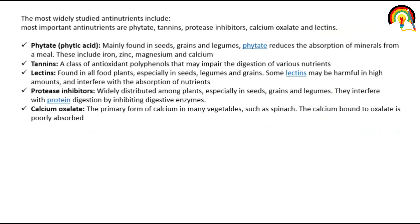The most widely studied anti-nutrients include: phytate, tannins, protease inhibitors, calcium oxalate, and lectins. We will take an overview, because if we go into detail on tannin and lectin, it will go into plant physiology.